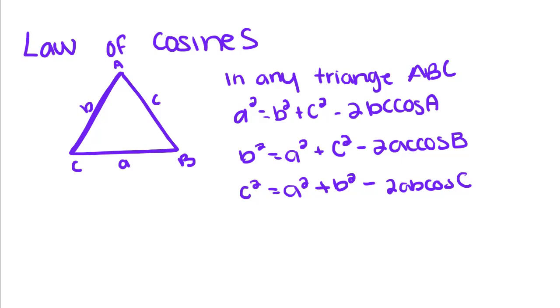So in any triangle ABC, A squared, which is the length of this side, equals B squared plus C squared minus 2BC cosine of A. And remember, cosine is a trig function, so we're going to have to use our graphing calculator that has a cosine function on it.